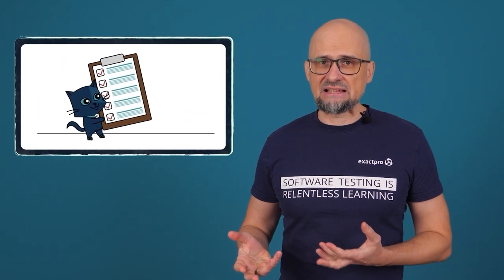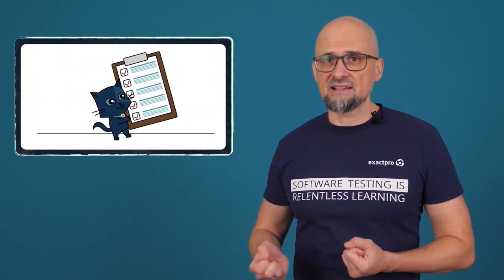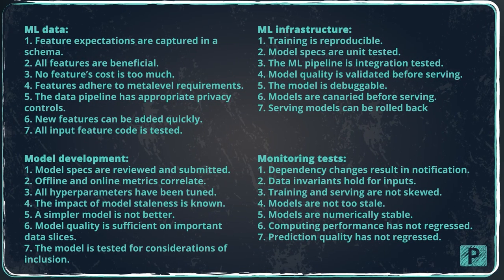As for checklist-based AI testing, Google suggests a set of 28 machine learning tests written as assertions in the areas of data, model development, infrastructure, and monitoring, which is used as a testing checklist for machine learning systems.